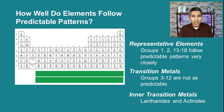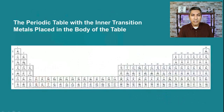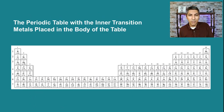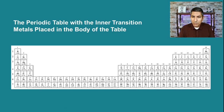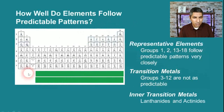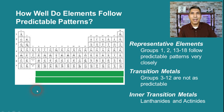You might wonder why we stick them at the bottom of the table. Well, if we put them in the body of the table where they really belong, the table would be twice as wide — very difficult to put on the wall. So we basically say for those elements: look down at the bottom. We often use that method of referring to the inner transition metals. They're very important and we still use them, but we place them at the bottom of the table.